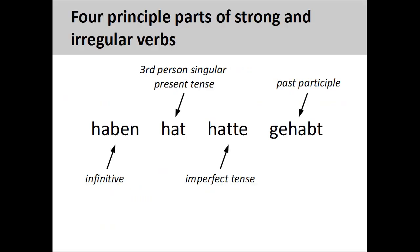In addition to regular verbs, German also has many irregular and strong verbs. These verbs have unusual variations in the conjugation of the present and imperfect tenses, as well as in the formation of the past participle. The imperfect tense is also known as the preterite, or simple past tense. Irregular verbs are sometimes also called mixed verbs.